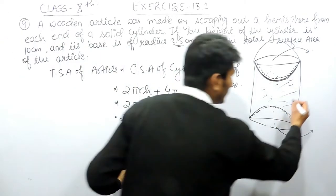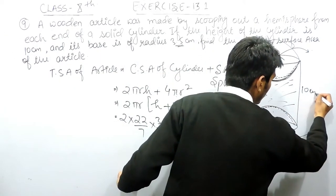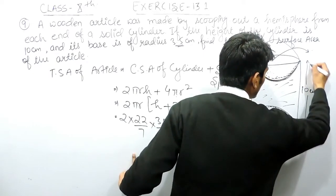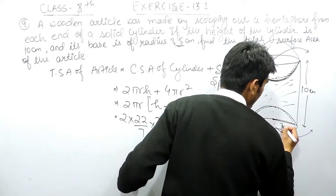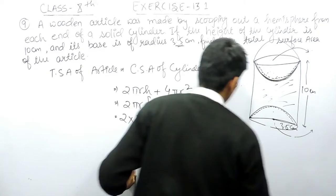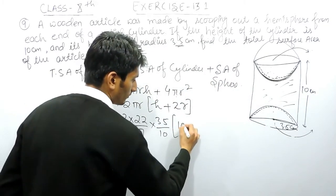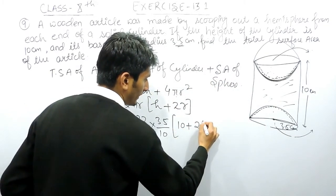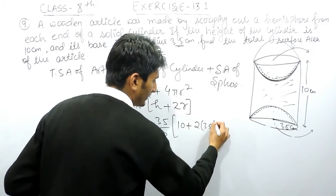Height is given to you as the height of the cylinder is 10 cm. This complete height is given to you as 10 cm. And the radius is 3.5 cm.